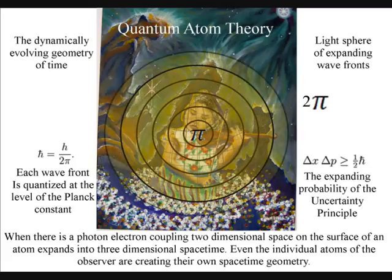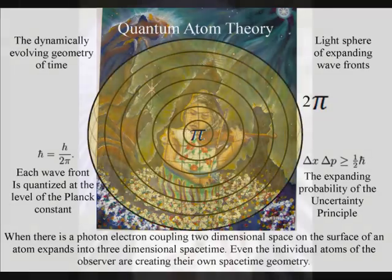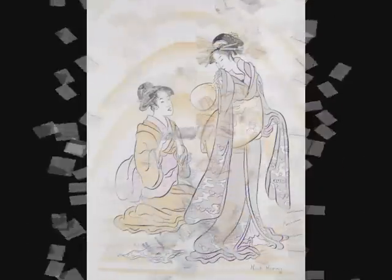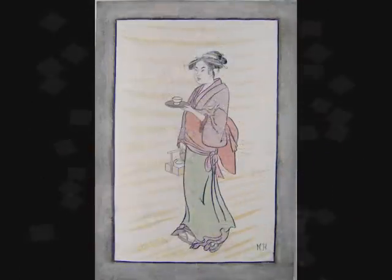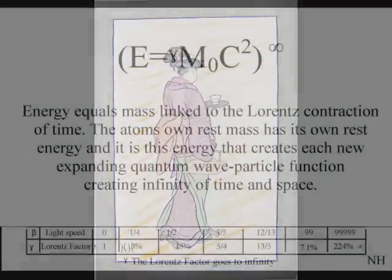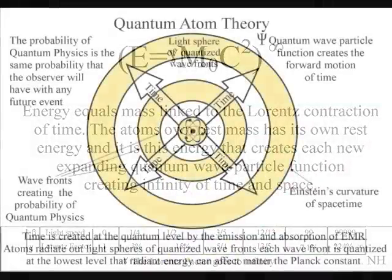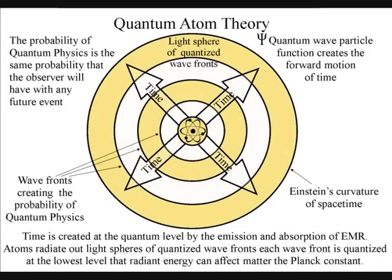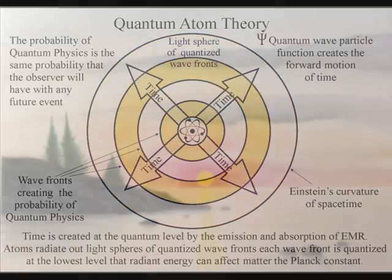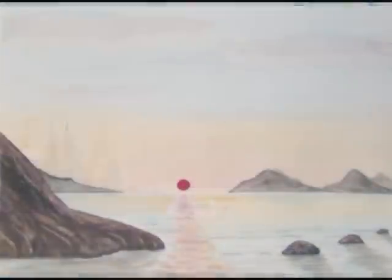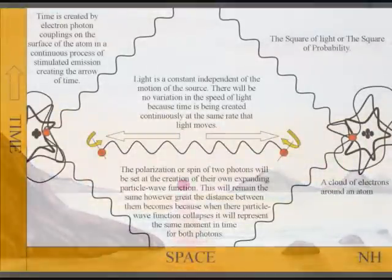This is very difficult to visualize, but in this oil painting of a geisha girl walking through sunlight, the wave-particle duality of the light will collapse as she walks through the rays of light. She will collapse the wave function into moments of time and space, creating her own space-time geometry. We therefore live in a universe of mortal space-times, and each space-time is governed by Lorentz contraction of time. Because this is a continuous process at the same rate that light moves, the speed of light between the atoms will always be a universal constant, independent of the motion of the source.